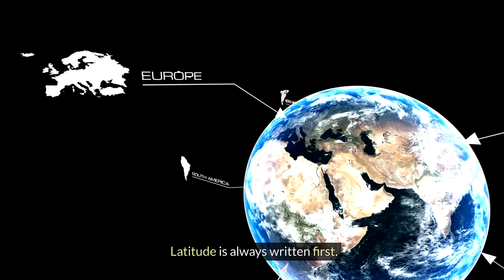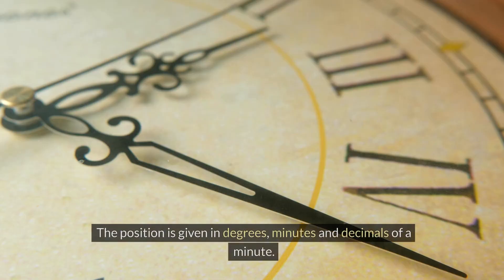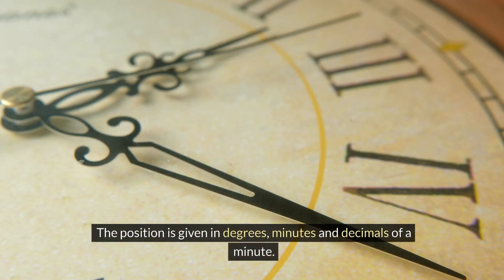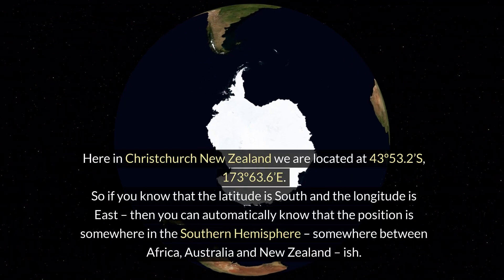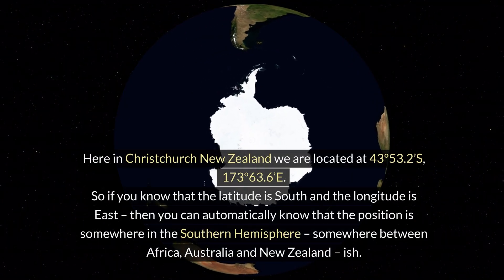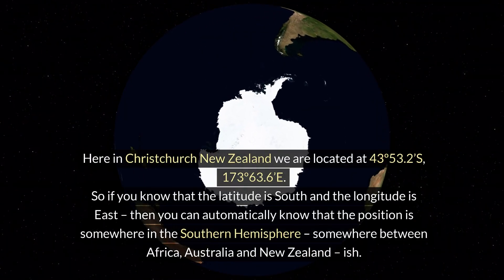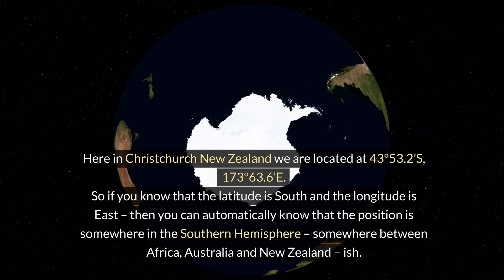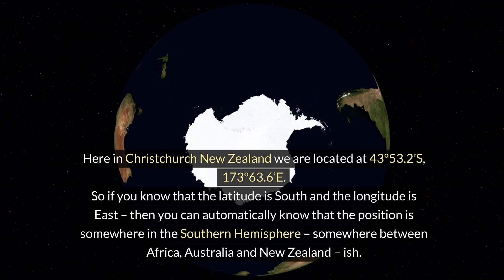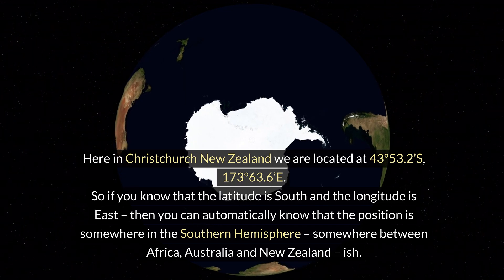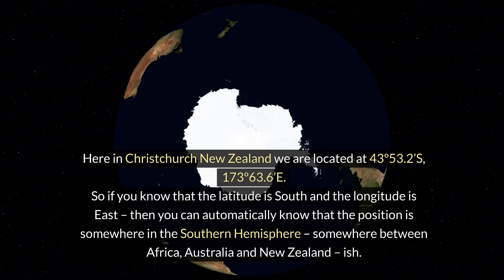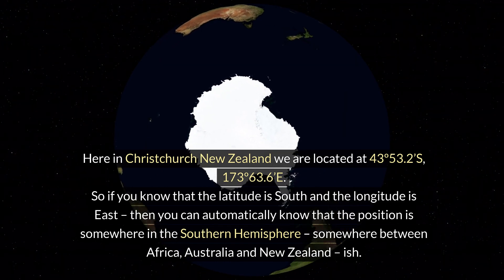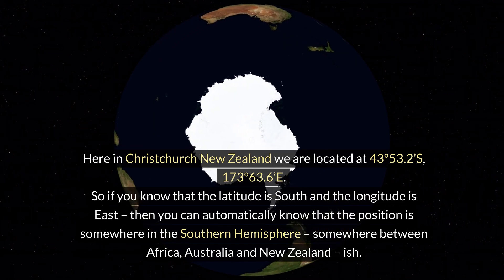Latitude is always written first. The position is given in degrees, minutes, and decimals of a minute. Here in Christchurch, New Zealand, we are located at 43°32'S, 172°38'E. So if you know that the latitude is south and the longitude is east, then you can automatically know that the position is somewhere in the southern hemisphere, somewhere between Africa, Australia, and New Zealand.